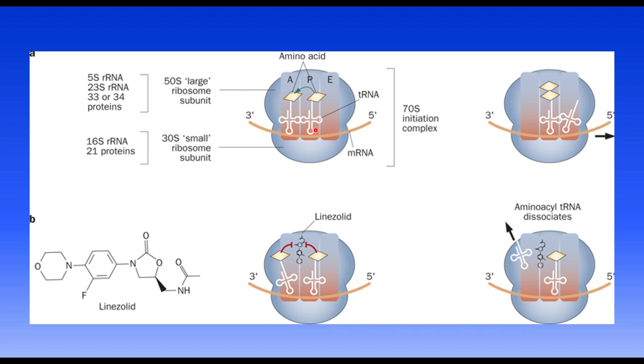Normally, without any antibiotic, the messenger RNA binds the transfer RNA within the ribosome and starts the initiation complex and protein synthesis. In this case, Linazolid binds to that subunit. The messenger RNA and transfer RNA cannot bind - they dissociate. There's no initiation complex and no translation of proteins. That's the mechanism of how it blocks protein production.